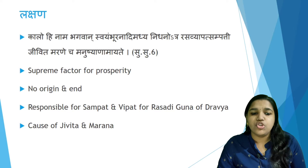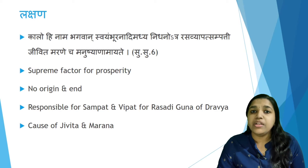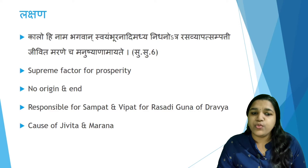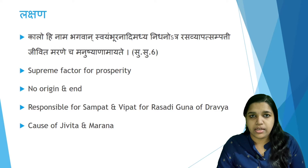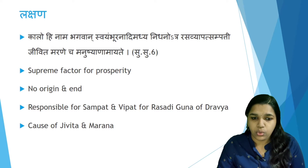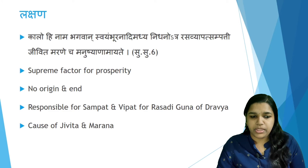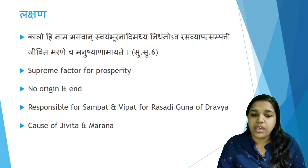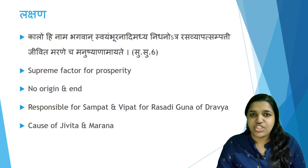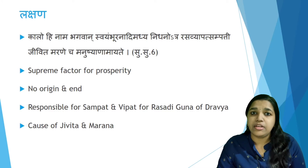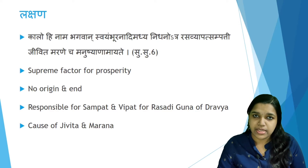Kala is considered to be the Supreme Factor for Prosperity — Kalohi Nama Bhagavan. It is considered to be the Bhagavan or Supreme Factor for Prosperity. And Swayambhu Anadi Mathya — it is considered to be Swayambhu, that is Anadi, not having any origin or end. And Rasavyapat Sambatti — it is responsible for the Sampat and Vipat of Rasadi Guna of Dravya. All vegetations attain their Rasadi Guna — that is Rasa, Guna, Virya, Vipaka, and Prabhava — by the effect of this Kala.